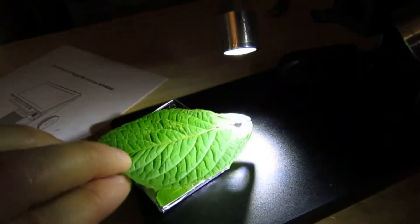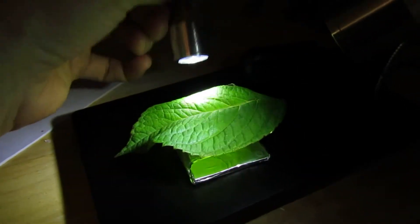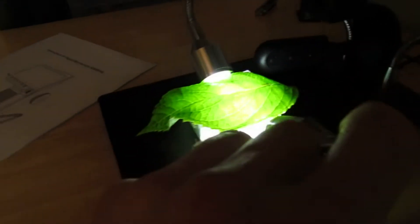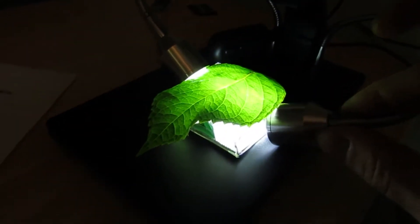And so we just put the leaf on top of it like this and then we slide the lights down to the bottom and now we got a really nice backlight that takes no power or anything of that sort.